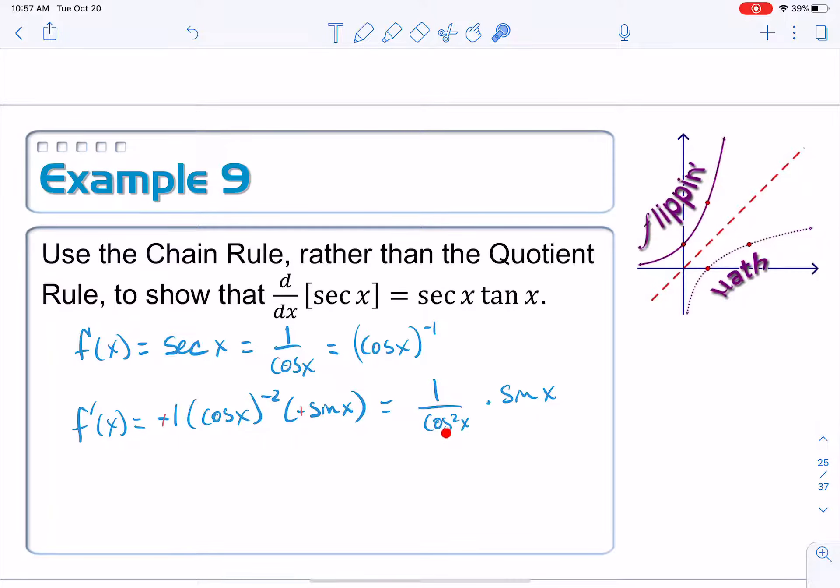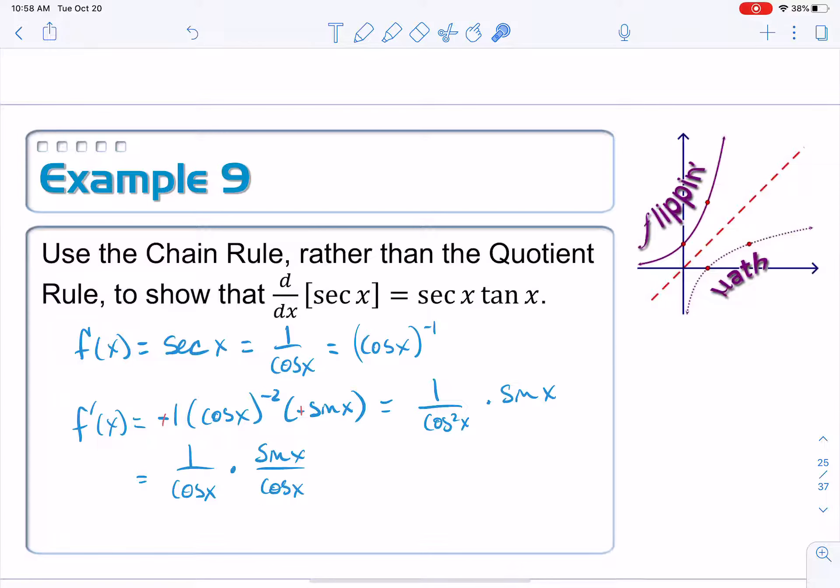We're just going to have to rearrange some things. So I've got a cosine squared down here in the bottom. I'm going to take one of these factors of cosine and I'm going to give it over here to this term involving the sine. Rewrite it like this. 1 over cosine x times sine x over cosine x. Right. If I were to multiply these, these two cosines will multiply it together to give me cosine squared.